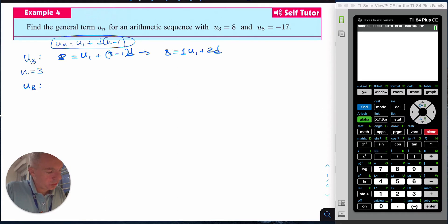Now doing exactly the same thing for u8 where n equals 8: u8 is -17, so -17 = u1 + (8-1)d. Rewriting this as -17 = u1 + 7d. So these are two equations with two unknowns: u1 and d.